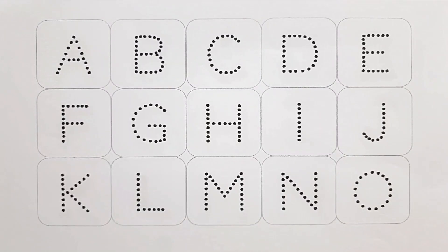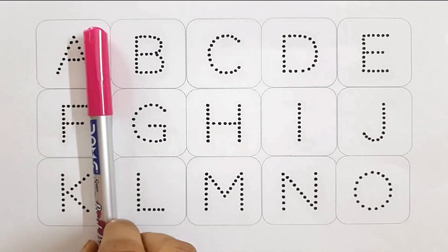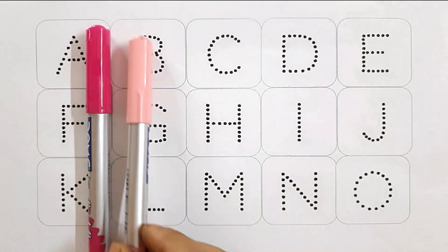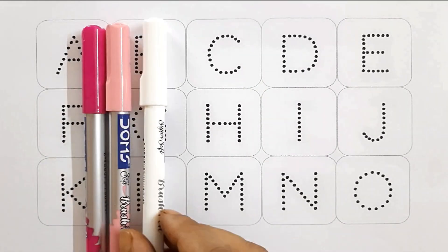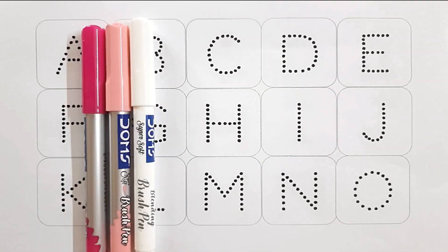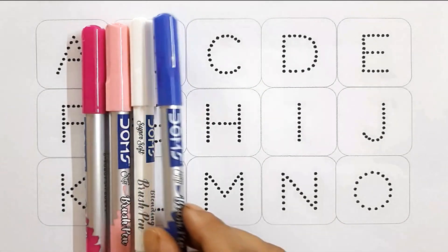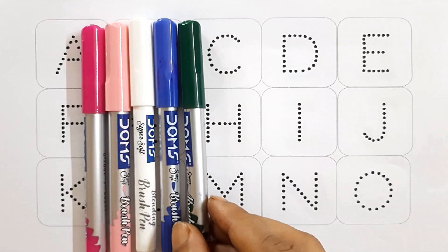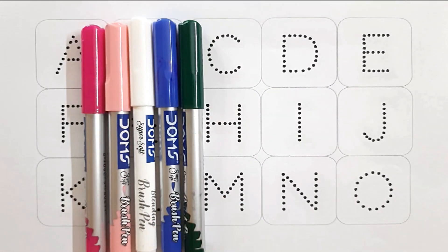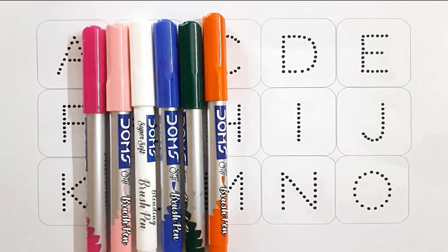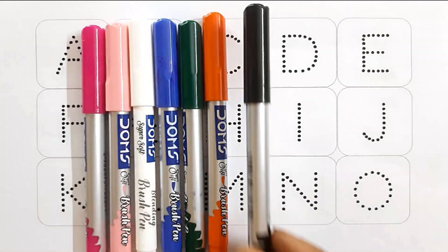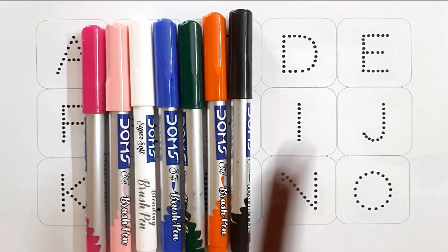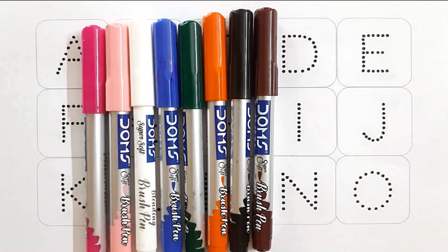Color name. Purple color. Pink color. White color. Blue color. Dark green color. Orange color. Black color. Brown color.